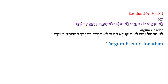Targum Pseudo-Jonathan, Exodus 20:13. We've seen from the Hebrew and Targum Onkelos that the content of the Masoretic text from verses 13 to 16 is squashed into verse 13 in the Targums.